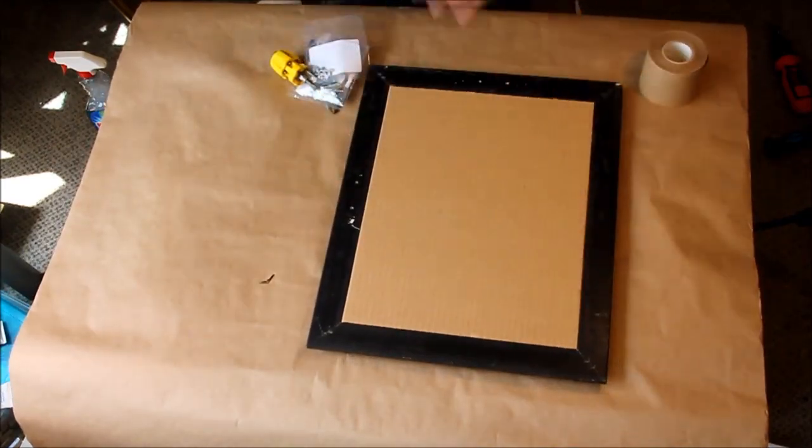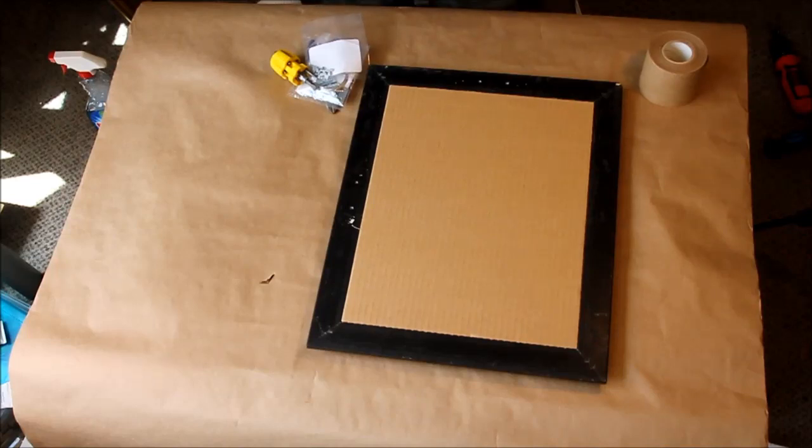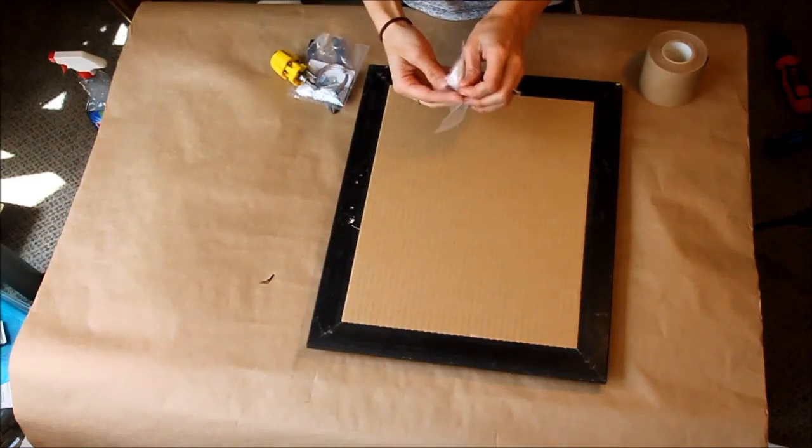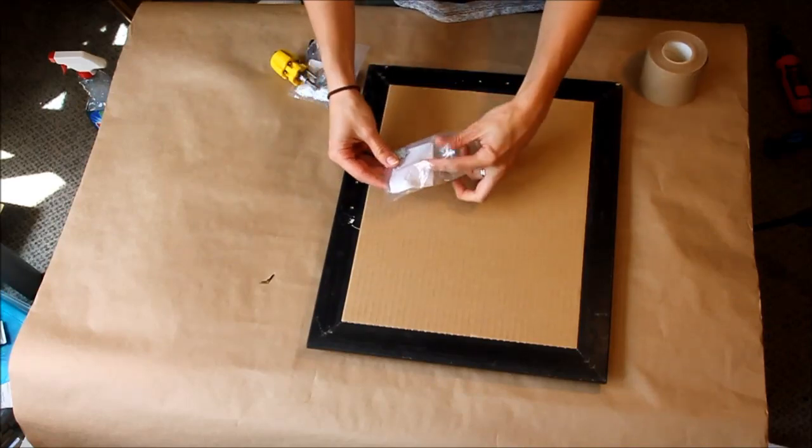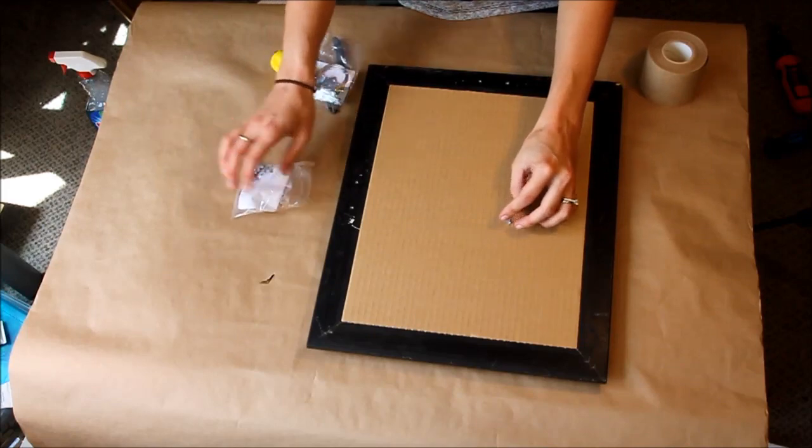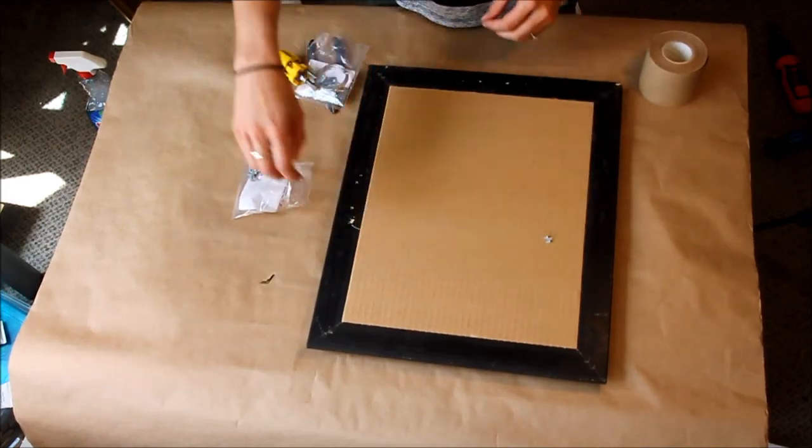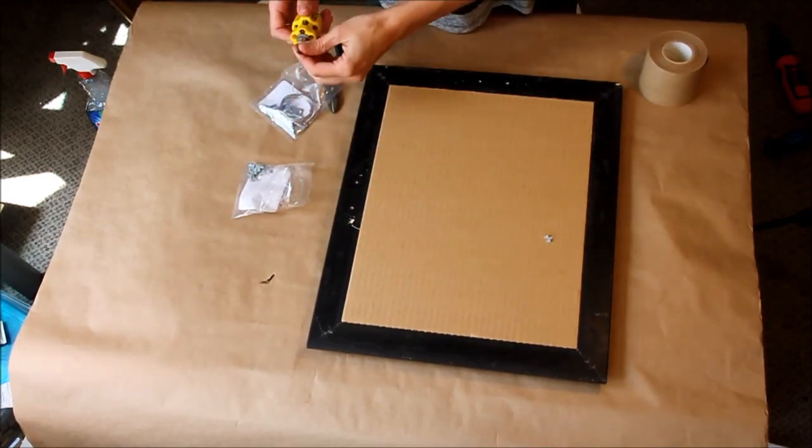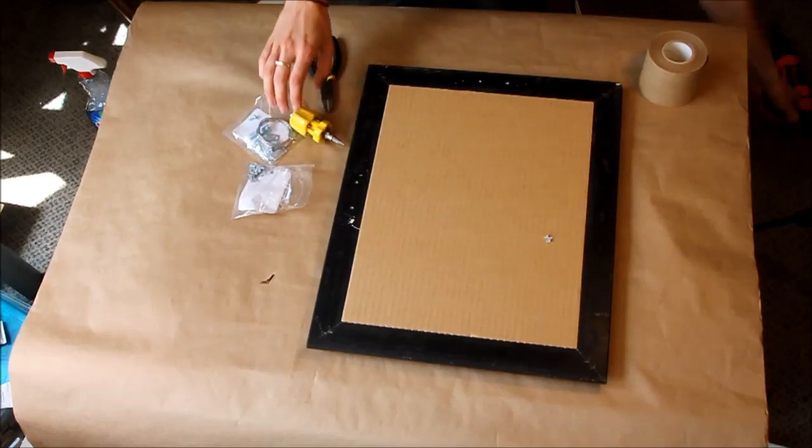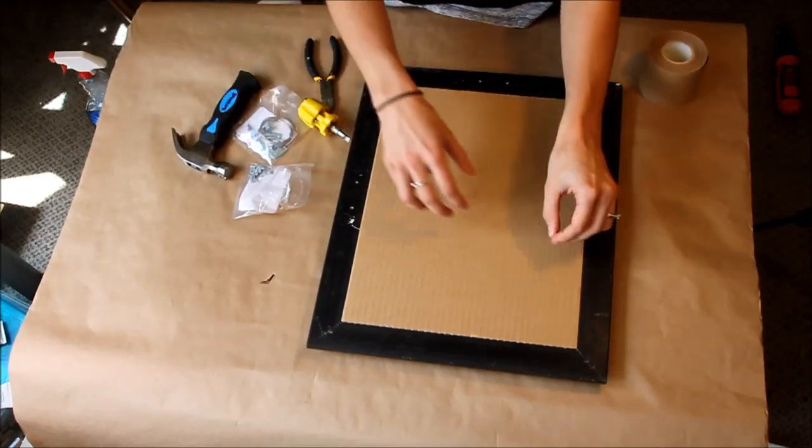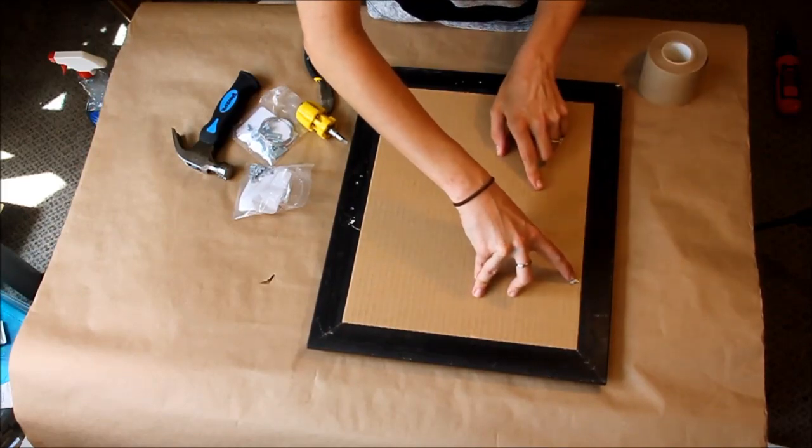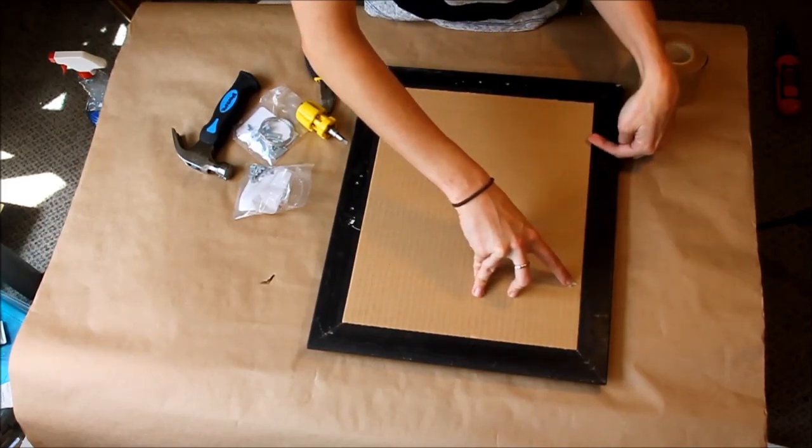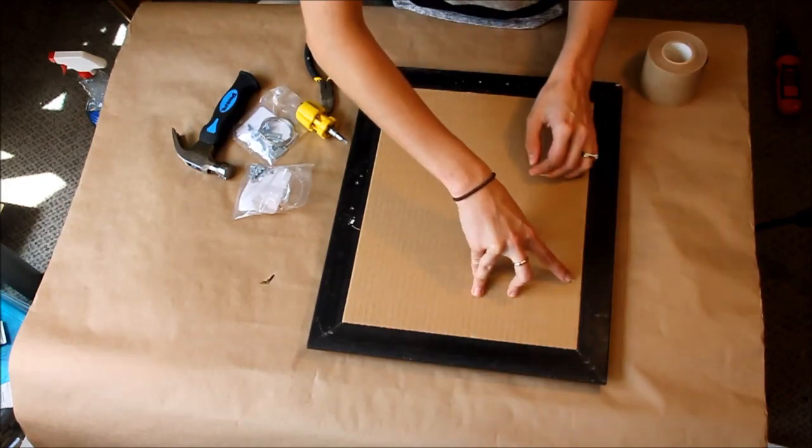Okay, so this part can be a little tricky. There are guns that you can buy to shoot these little tabs into the side, which would probably be a lot easier, but I'm doing it the hard way. So with these little tabs, you just put them at the back, and it's to keep everything in. And I'm going to be doing three on the long side and two on the short side.